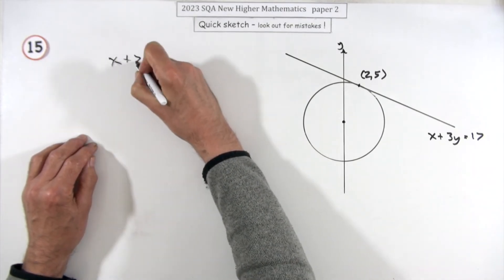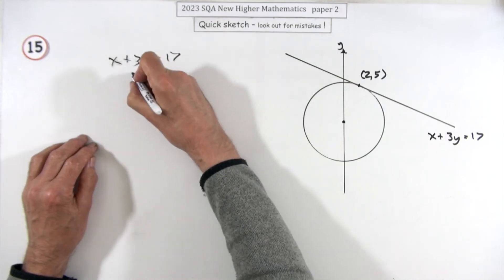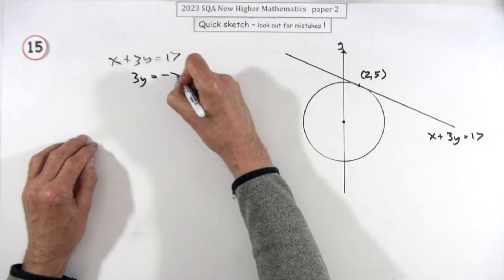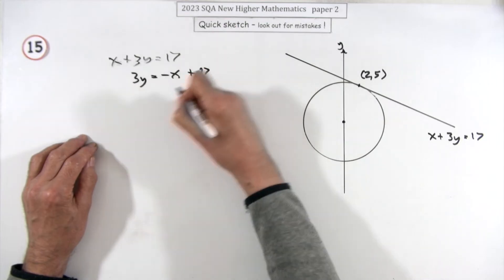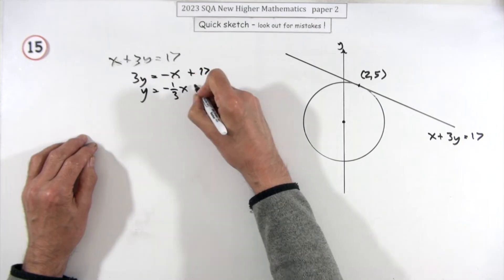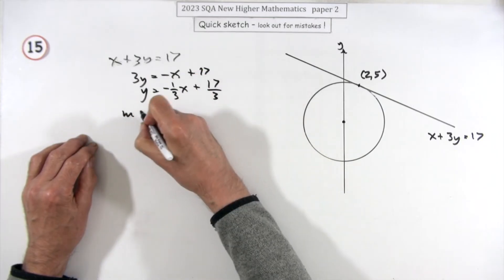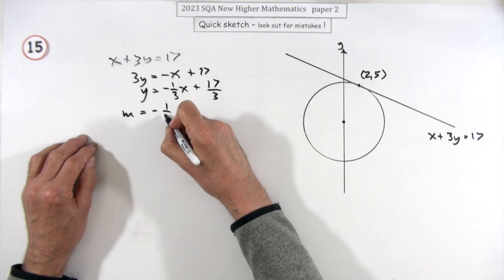x plus 3y equals 17. I'll just rearrange that. 3y is negative x because I want to extract its gradient, so y will be negative a third of x, and I don't really care about this part here.